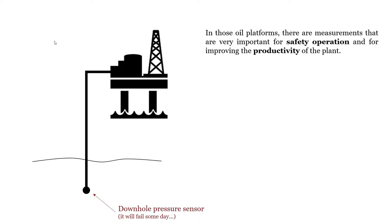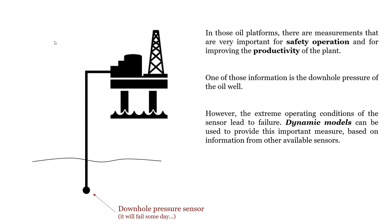In those oil platforms, there are measurements that are very important for safety operation and for improving the productivity of the plant. One of those is the downhole pressure of the oil well. However, the extreme operating conditions of the sensor lead to failure. Dynamic models can be used to provide this important measure based on information from other available sensors.